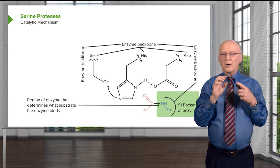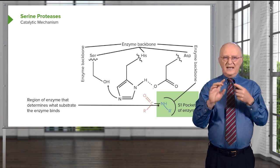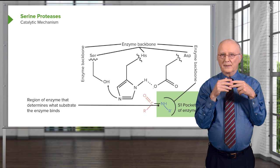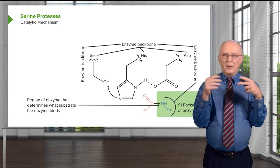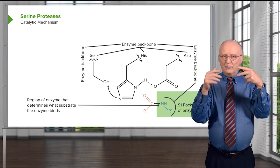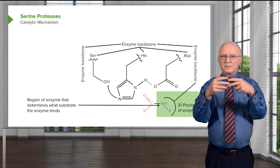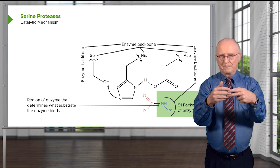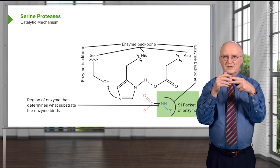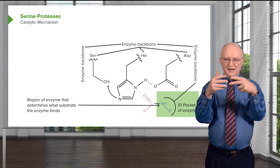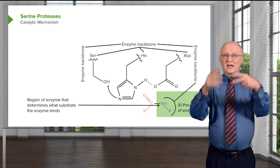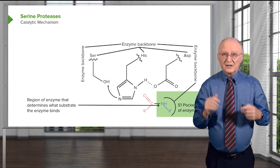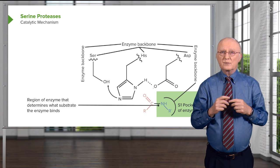The S1 pocket gives the enzyme its specificity. The S1 pocket will not bind to everything — it will bind to specific proteins with specific sequences within them. That's a very important concept. If it doesn't encounter those specific things, it won't bind them. And if it won't bind them, there's nothing to react, and this process will not occur.